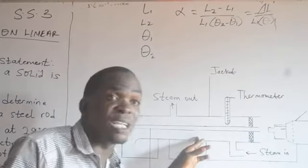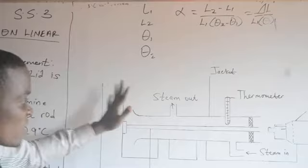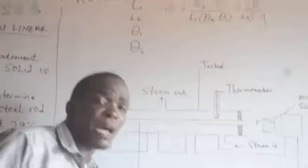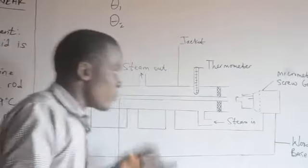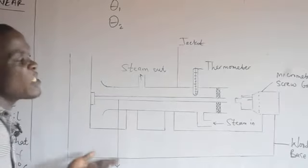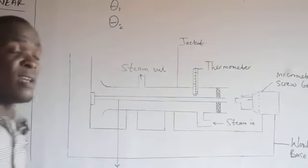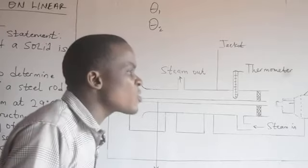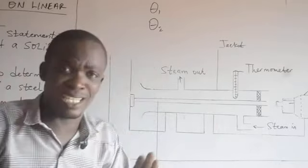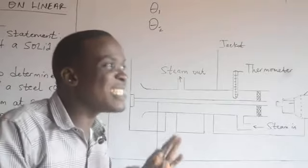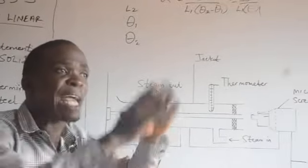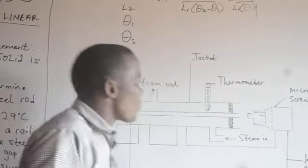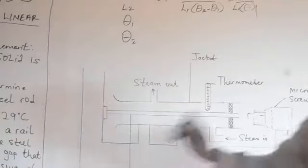During this process we have explained the function of all the parameters and the diagram. Through this experiment we have been able to prove the linear expansivity of the steel rod. For examination purposes, it is advisable to make sure your diagram is clearly stated and neat, parameters are stated, and try to be brief since paper spaces are limited. From here we have been able to prove the experiment.